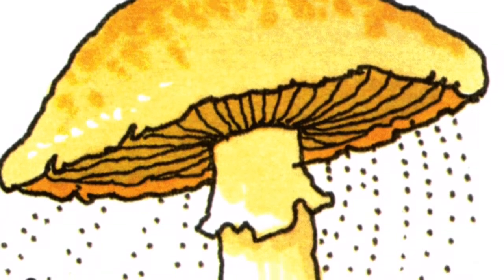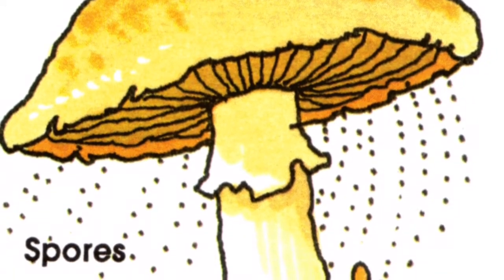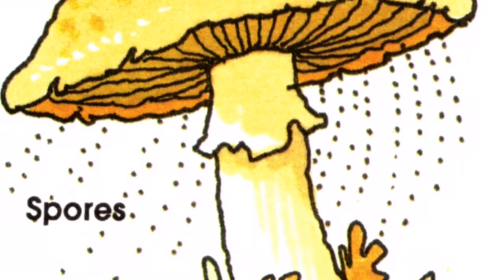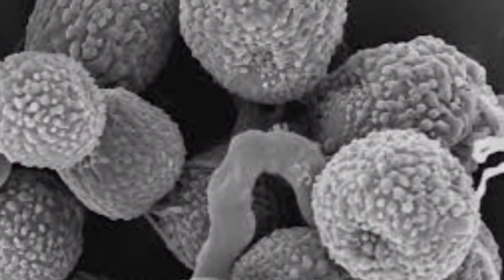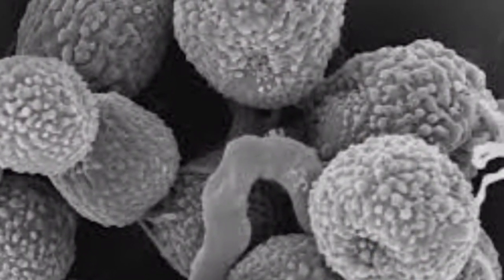Spores are specialized cells that are adapted to survive in harsh conditions. The spore process occurs in both eukaryotic and prokaryotic cells. Spores sometimes form into fungi.